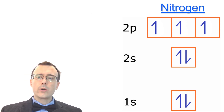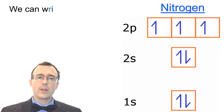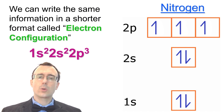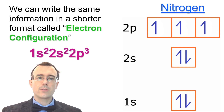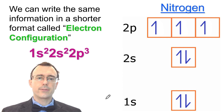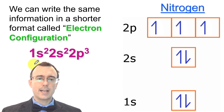Now, this is one way to represent or to show where the electrons are in the atom. But there is another way that we can do it too. We can take that same information and write it in a shorter format called electron configuration. The electron configuration for nitrogen is written right here — it is essentially a shorthand way to write exactly the same information, although a little bit of information is lost in that it doesn't show how these are all pointing up. Let's go over what everything means in this electron configuration.